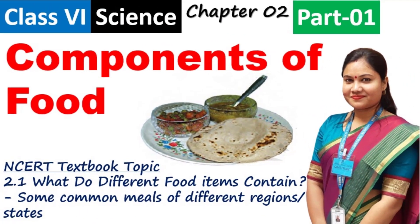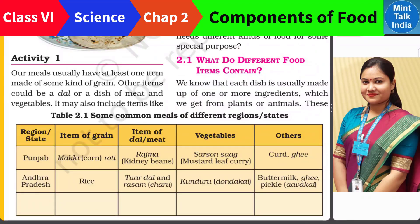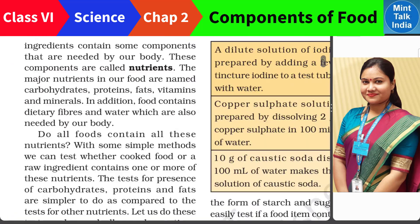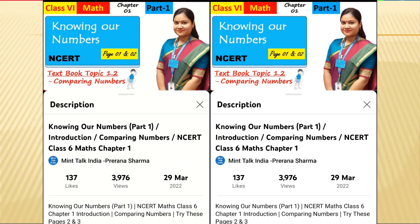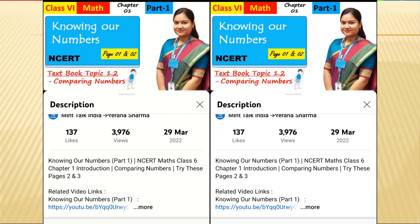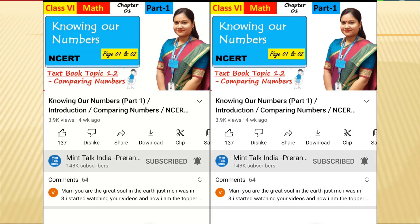Hello and welcome to Mint Talk India. We are studying NCERT class 6th science chapter number 2, Components of Food, and this is part 1 video with the introduction of Activity 2.1 — what do different food items contain, and what do you mean by nutrients? Links for other parts of this chapter will be available in the description box or in the playlist of class 6th science on the Mintalk India channel.